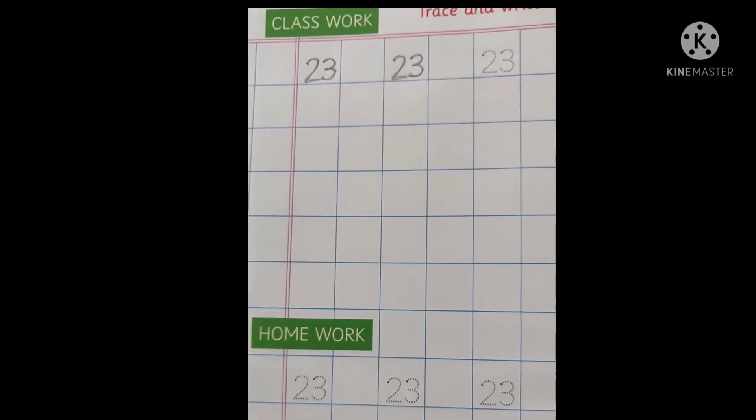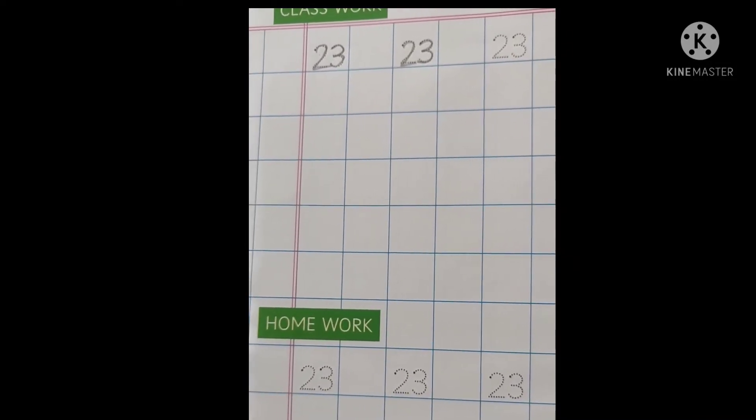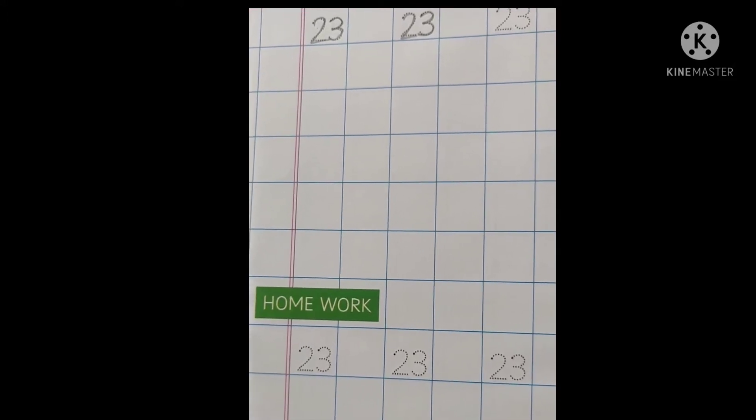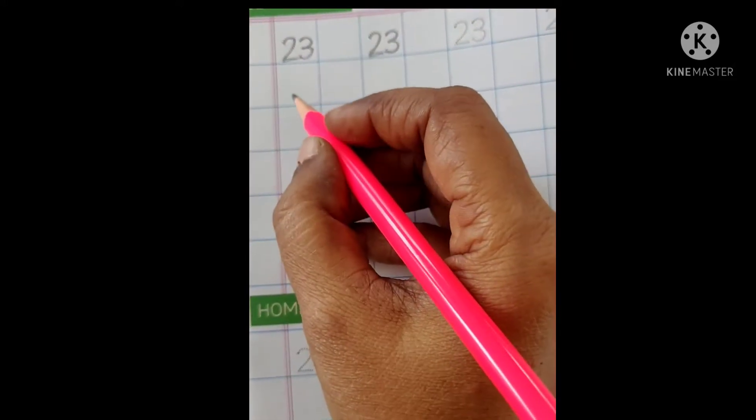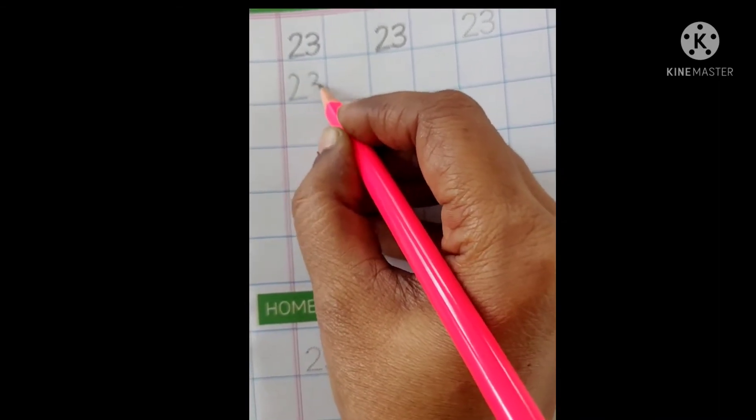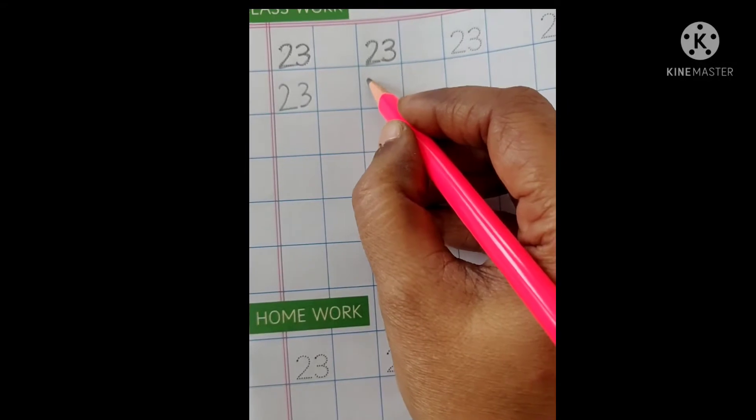2 and 3 together we pronounce it 23. Okay, not 2-3 but you should say 23. Okay, I am writing once again here. Don't leave the square children. 23, 23.